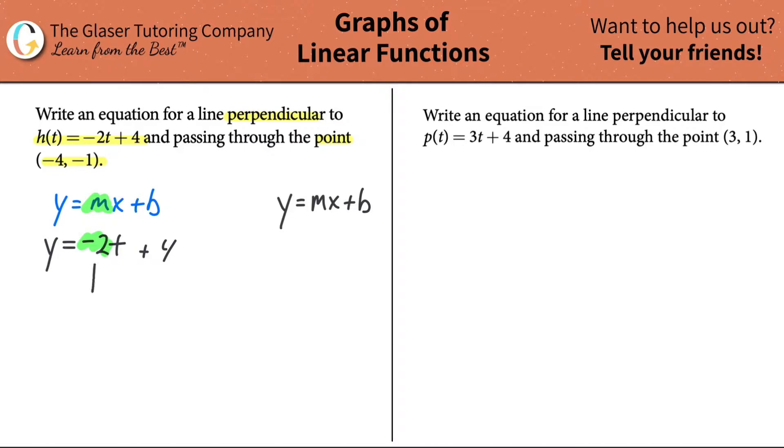You can rewrite this as -2/1, and the opposite reciprocal will be positive 1/2. Flip the sign and flip the fraction. That's it. That's what it means to be negative or opposite reciprocal. So I now know the slope of this new line is going to be y = 1/2 x plus b.